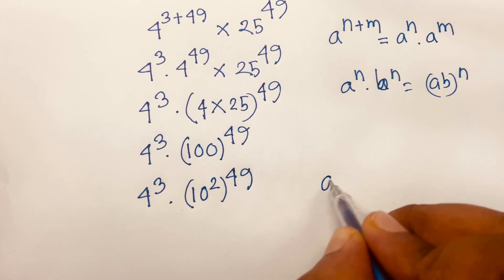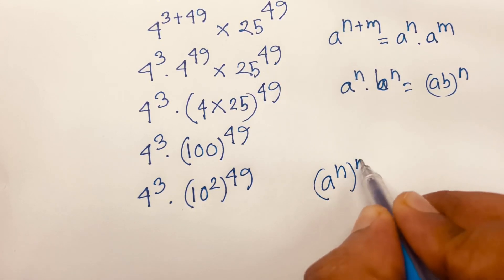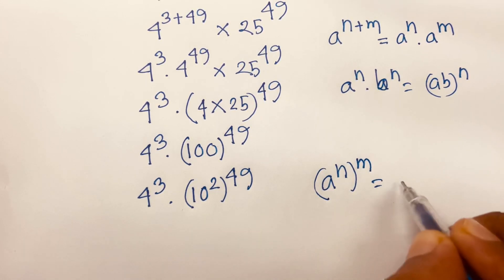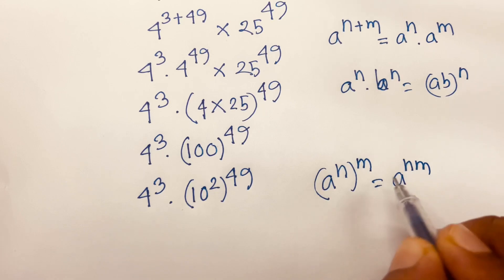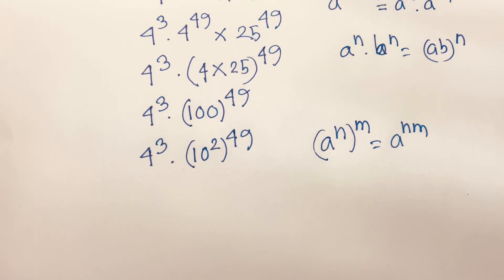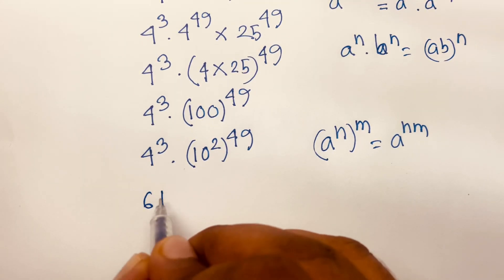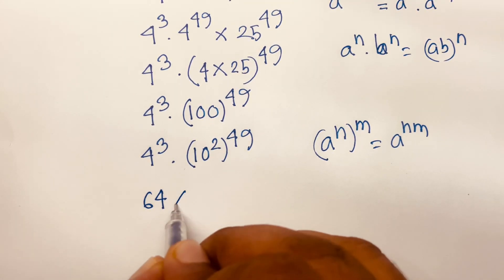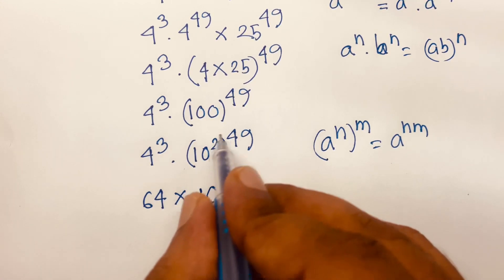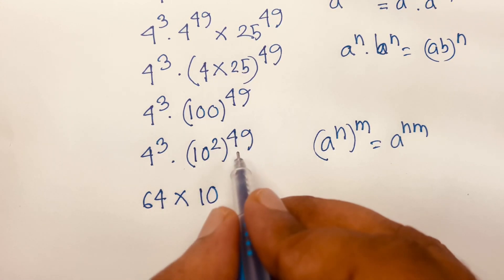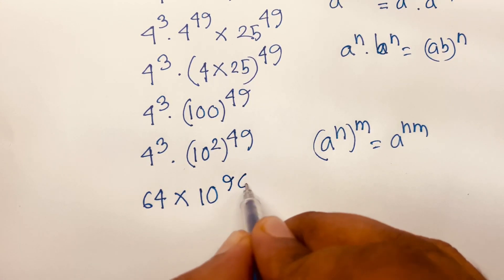We know that (a to the power n) to the power m equals a to the power n times m. Applying this rule, we get 64 times 10 to the power 2 times 49, which equals 10 to the power 98.